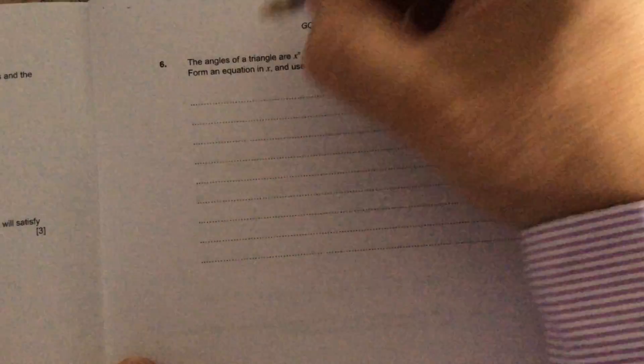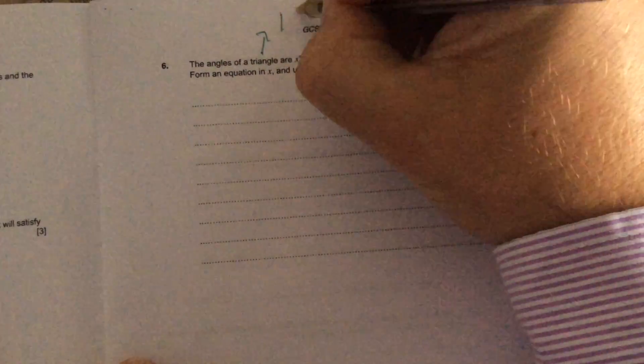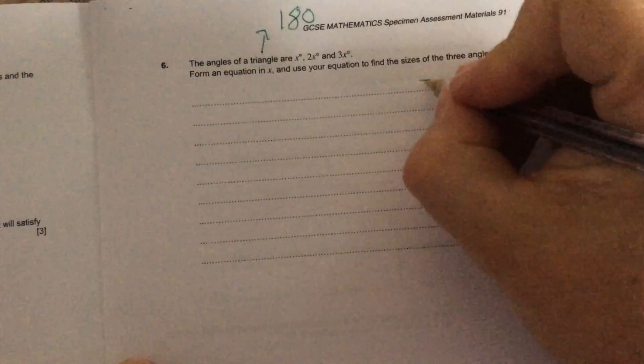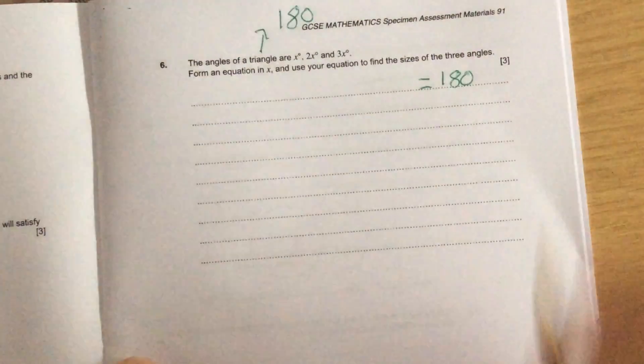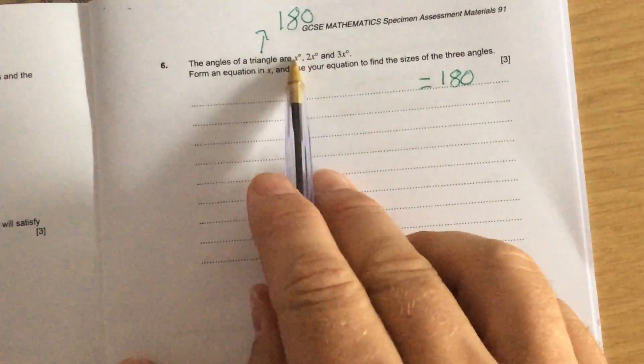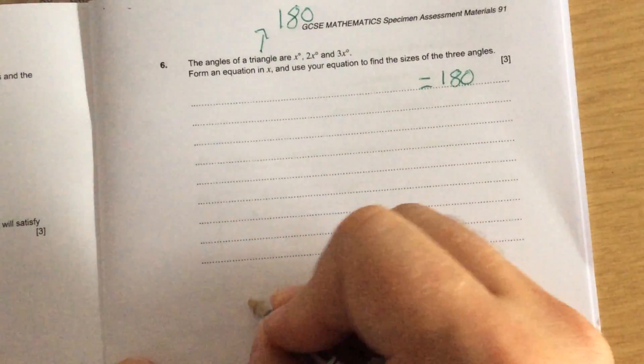Question 6. Angles of a triangle. So angles in the triangle add up to 180. So my answer is going to be equal to 180. The angles are x add 2x add 3x.